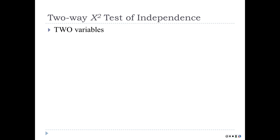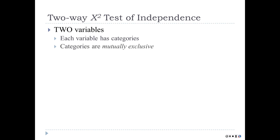The Two-Way Chi-Square involves two variables instead of just one. Each variable has categories, so this is a test of association between two categorical variables. If one of your variables is a truly numeric variable, you probably don't want to use this. Two categorical variables.